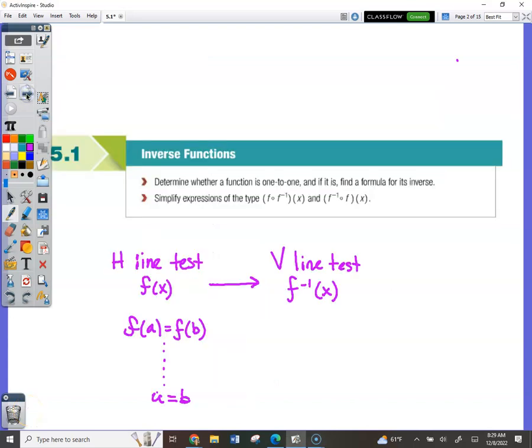Wrapping up Chapter 5, Section 5-1, the whole purpose behind it was recognizing if a function is what's called 1-to-1. If a function is 1-to-1, it means that it will pass the horizontal line test, which means that when you graph the inverse function, it would pass the vertical line test. The algebra behind that is this right here.